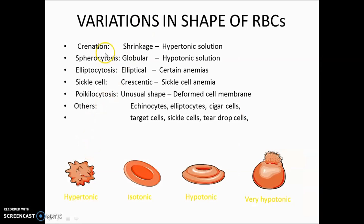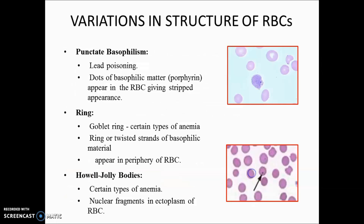Different RBC shapes: crenation (shrinkage) occurs in hypertonic solution; spherocytosis shows globular RBC in hypertonic solution; elliptocytosis is seen in certain anemias; sickle cells show crescentic RBC; poikilocytosis shows unusual shapes due to cell membrane deformation. Structural abnormalities: punctate basophilia is seen in lead poisoning (basophilic material in RBC); Cabot rings are seen in many anemias; Howell-Jolly bodies (nuclear fragments in RBC cytoplasm) are seen in iron deficiency anemia.